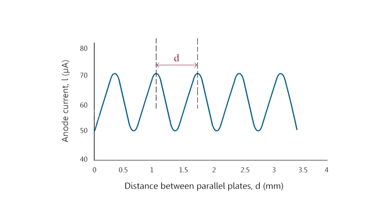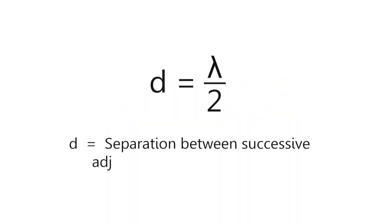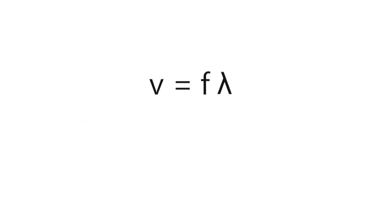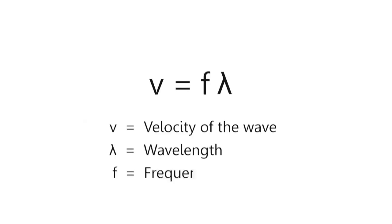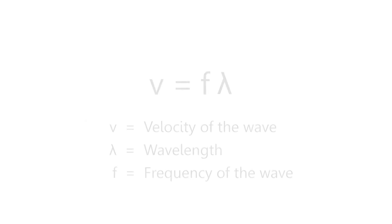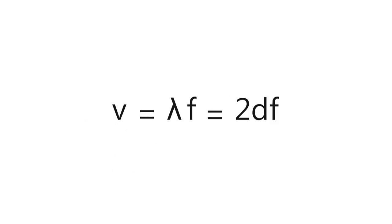If d is the separation between successive adjacent maximum anode current, then d = λ/2. We have the velocity v of a wave that is related to its wavelength λ by the relation v = fλ, where f is the frequency of the wave. That is, v = λf = 2df.